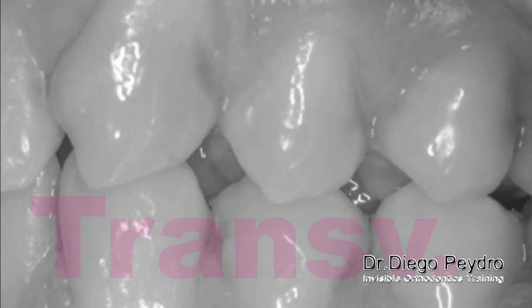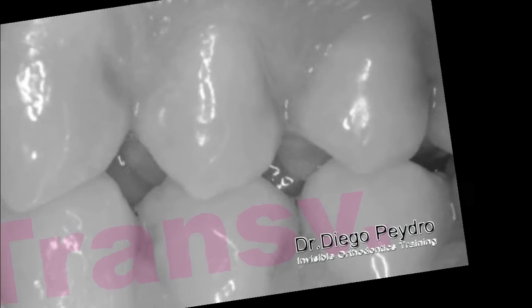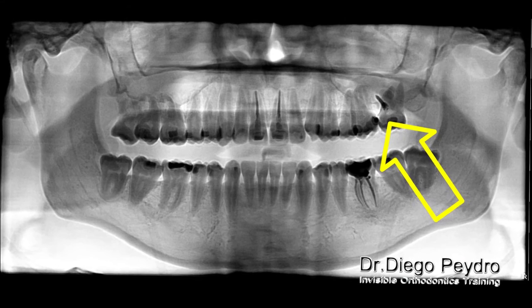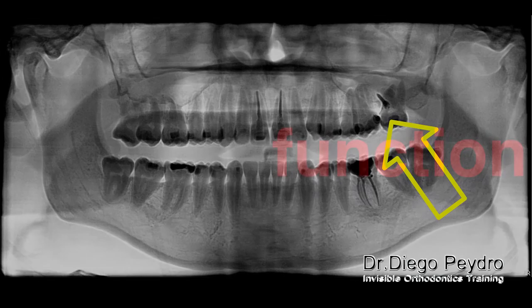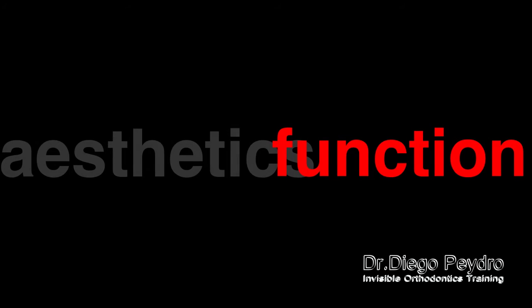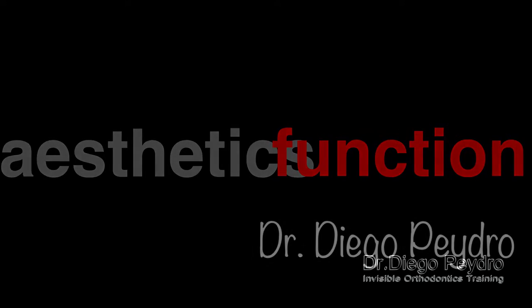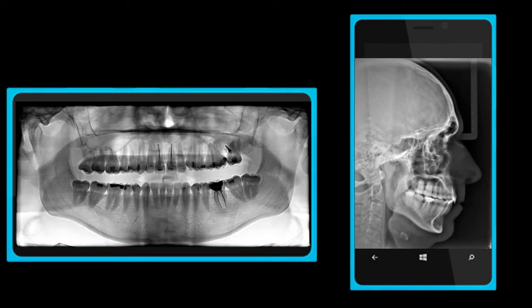How we plan with the techniques to solve the transversal problems — and to solve the Class 2 at the end, I will use a mini-screw located between the first and second molar. After a year and a half of treatment, this is the final result that we are going to get.